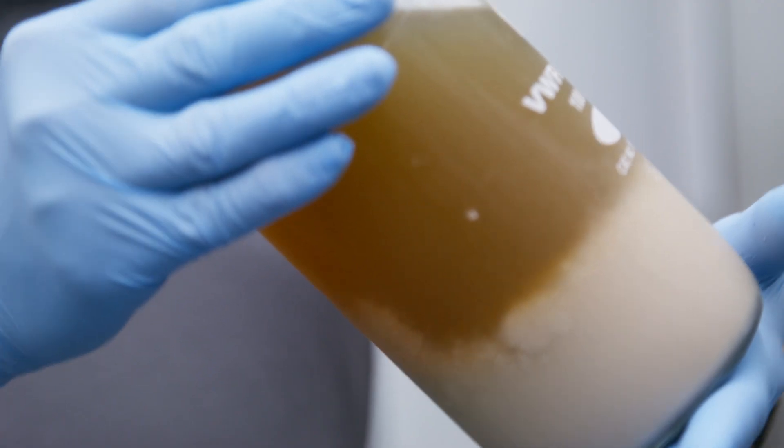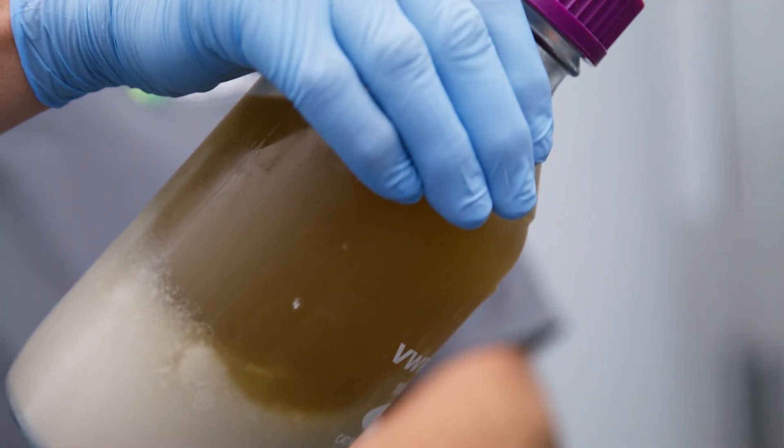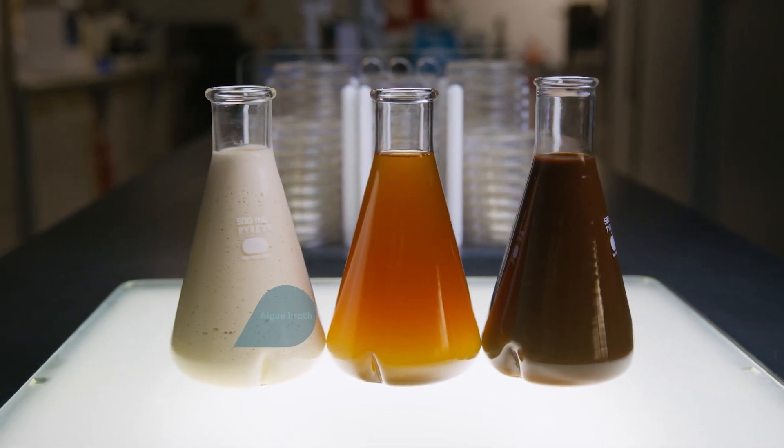We open the cell walls, extract the oil, and separate the co-product called Verafirm that is used locally to feed cattle.